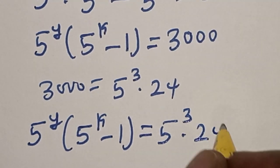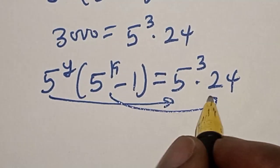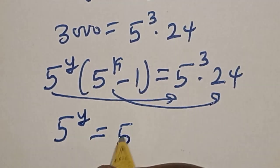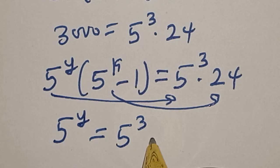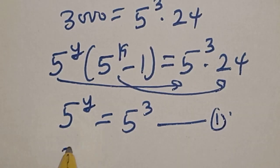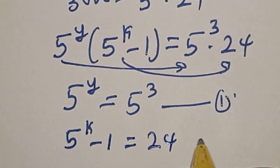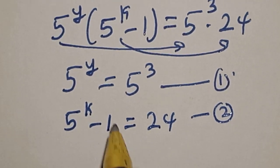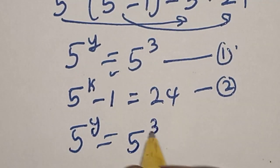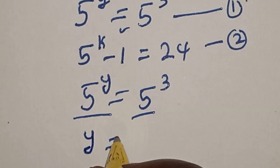By comparing both sides, we set 5 raised to power y equal to 5 raised to power 3 — call this equation 1 — and 5 raised to power k minus 1 equal to 24 — call this equation 2. From equation 1, since they have the same base, y is equal to 3.